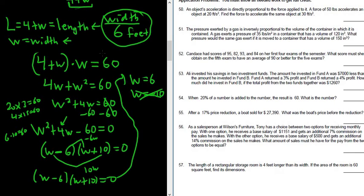And then the length is four plus W. So you just add four. So the length will just be 10 feet, right? Because six plus four is 10, right? You just do four plus six. And so you get 10. So kind of an interesting problem. I hope this video has been helpful.